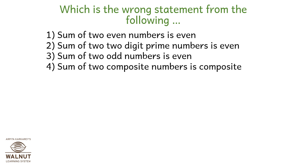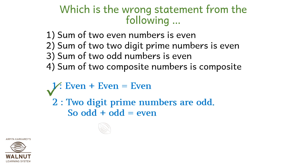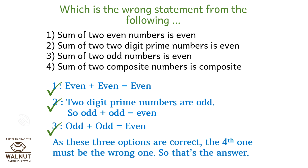Which is the wrong statement from the following? Option 1: even plus even is always even — that is right. Option 2: two-digit prime numbers are odd, so odd plus odd is even — that is also right. Option 3: odd plus odd is even — that is also right. As these three options are correct, the fourth one must be wrong. So that's the answer.